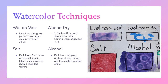Wet on wet is using wet paint on wet paper, creating a blurred effect. Wet on dry is wet paint on dry paper, creating very sharp edges and lines. Salt involves placing salt on wet paint that is later brushed away to show a speckled texture. Alcohol is dripping rubbing alcohol on wet paint to create a spotted effect.